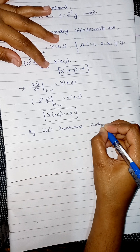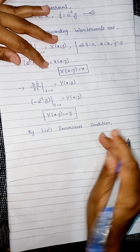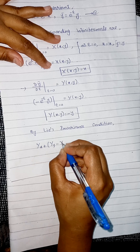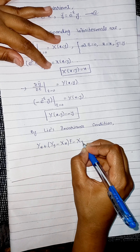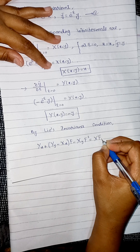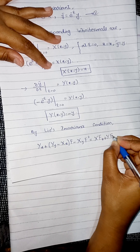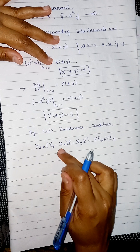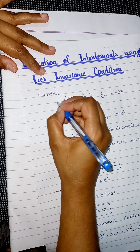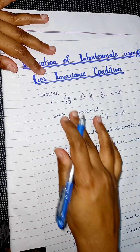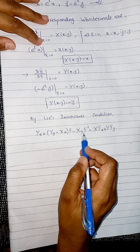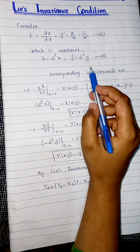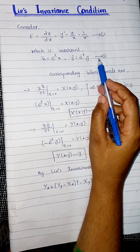By Lie's invariance condition, the equation states: η_x plus η_y minus ξ_x times capital F minus ξ_y times F squared is equal to ξ F_x plus η F_y. This is Lie's invariance condition. If you look at this equation, capital F is our given ODE — equation number one — and capital X and capital Y are our infinitesimals, which we can find from equation number two, our given Lie group.